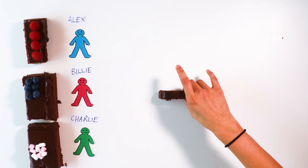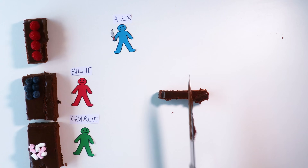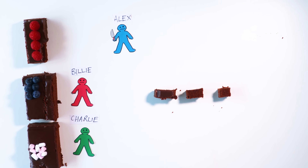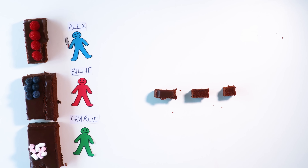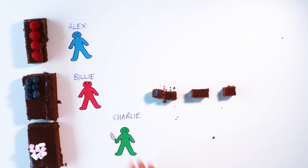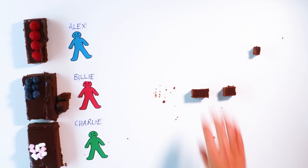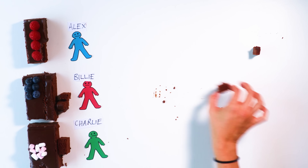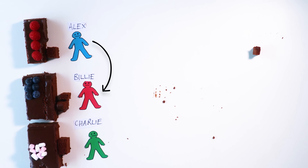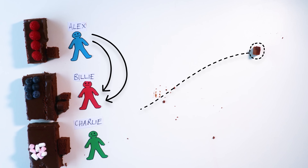Now we want Alex to dominate Charlie so we can remove Alex and run cut and choose on Billy and Charlie. To do this, we run the same protocol on the residue. Alex cuts the residue into three equally valuable pieces. Billy and Charlie both think the same piece is best and the same piece is second best. They both trim their favorite piece to the value of their second favorite, and Billy wins it again. We put the residue of the residue to the side. Charlie chooses a piece for himself and Alex gets the last piece. Here we have Alex dominating Billy again, as the residue of the residue came from her piece.